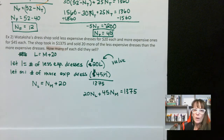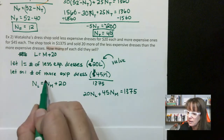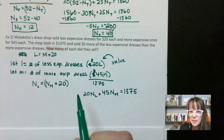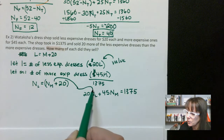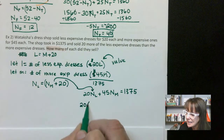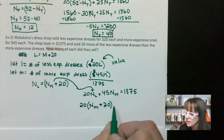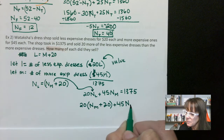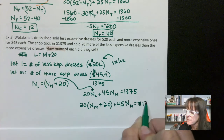This is a great case for substitution again, because N sub L equals all of that expression. So all I have to do is plug that in. I get: 20 times the quantity (N sub M plus 20) plus 45 N sub M equals 1,375.